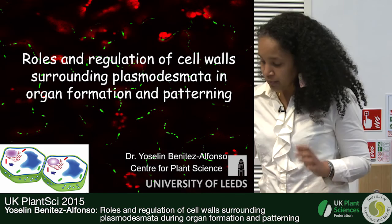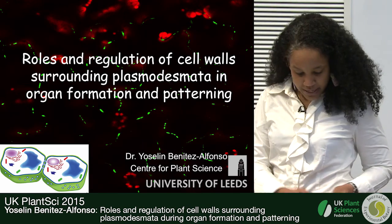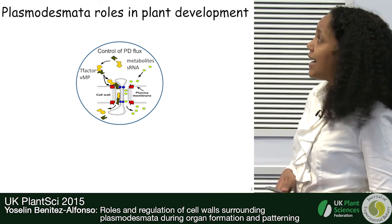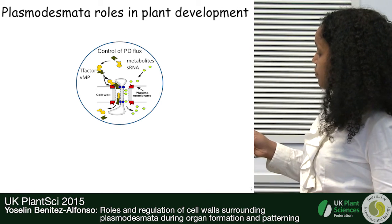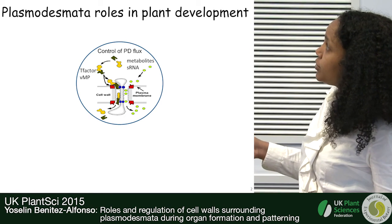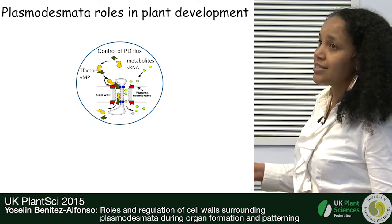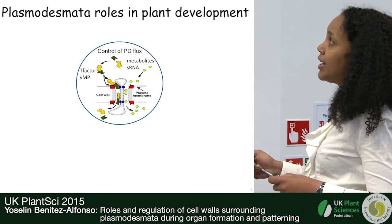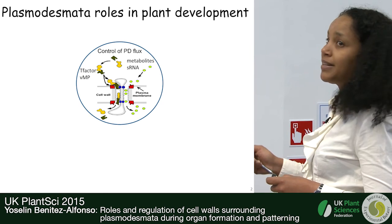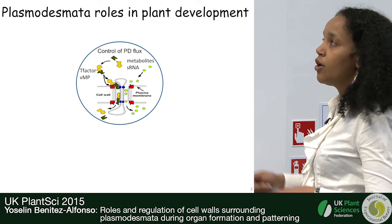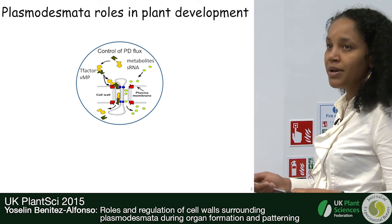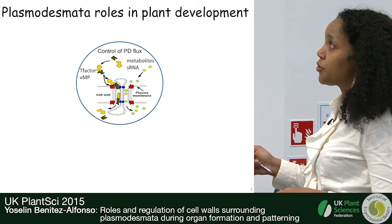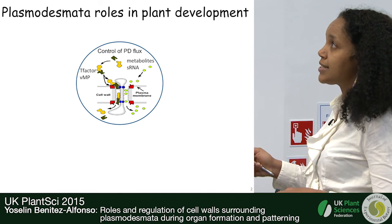Through the Plasmodesmata, many molecules are transported because they provide a cytoplasmic continuum, so two cells are not completely separated. They allow the transport of metabolites, small RNAs, and hormones just by diffusion. Small molecules can be transported through Plasmodesmata from one cell to the other.